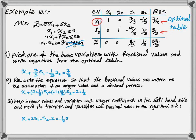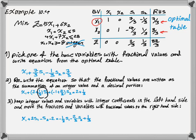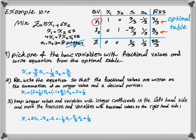We keep integer values and variables with integer coefficients on the left-hand side and move any fractions and variables with fractional coefficients to the right-hand side. So x1 plus 2s1 minus s2 and 2 stay on the left-hand side, while 1/3 s1, 2/3 s2, and 1/3 go to the right-hand side. This equation is exactly the same as before — we've just separated integer and fractional parts to opposite sides.